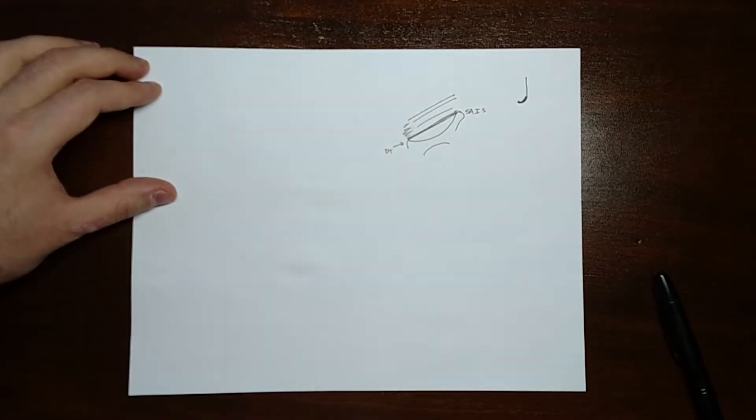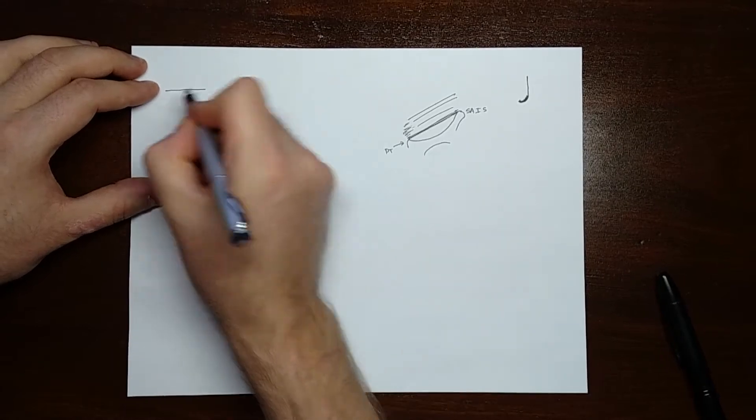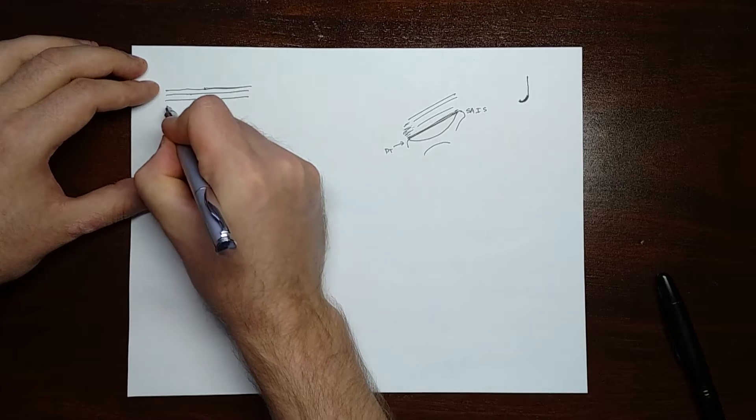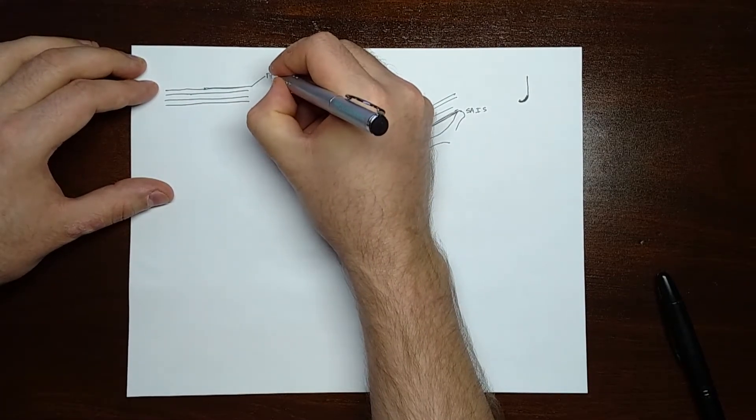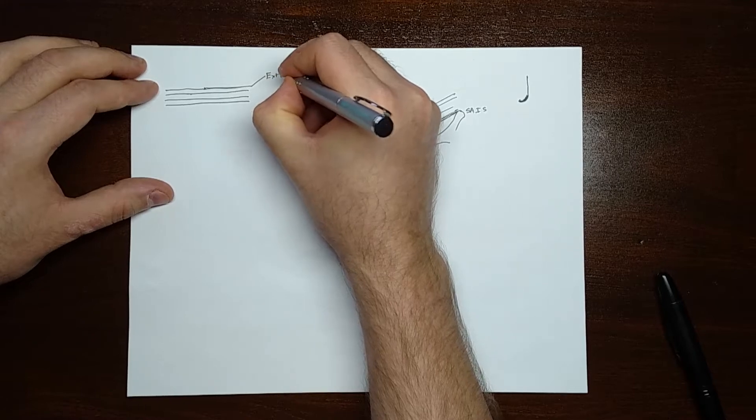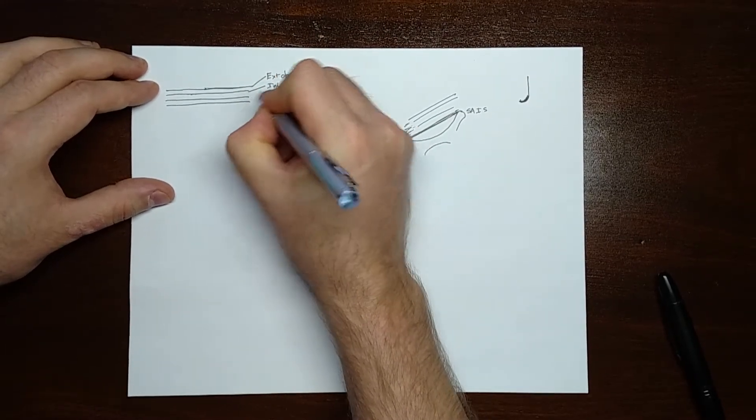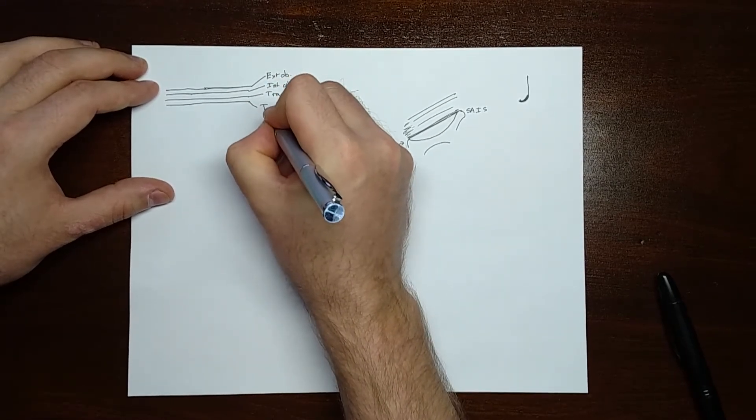The way I like to think about it is as if it were a hernia. You've got kind of four layers to start with here. You've got the external oblique, the internal oblique, the transversalis muscle, and the transversalis fascia.